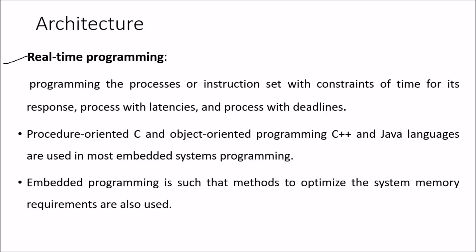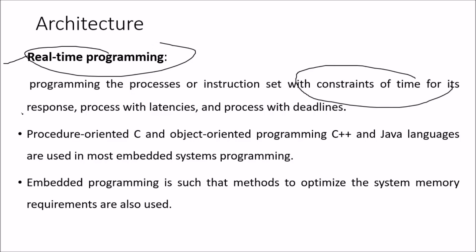Then comes real-time programming — programming a process or instruction set with a constraint of time. The constraint of time is what defines real-time programming: processes with least latency and processes with strict deadlines. The procedure-oriented language C and object-oriented languages C++ and Java are used in most embedded system programming.